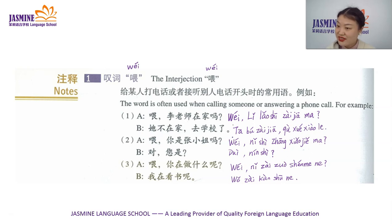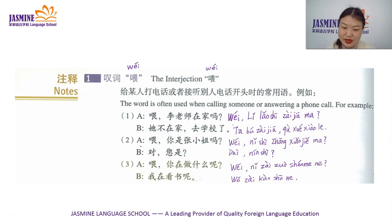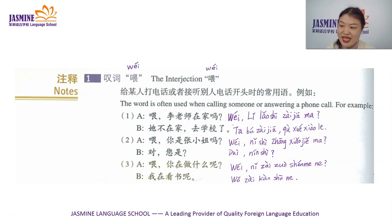So now you understand, right? Let's read these three dialogues again: 喂, 李老师在家吗? 他不在家, 去学校了。 喂, 你是张小姐吗? 对, 您是。 喂, 你在做什么呢? 我在看书呢。 OK, you got it? Please do more practice.